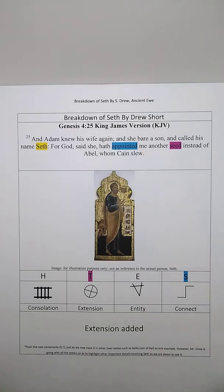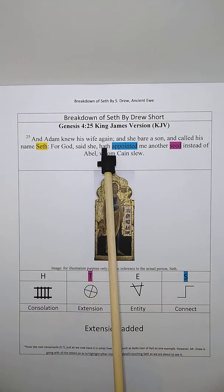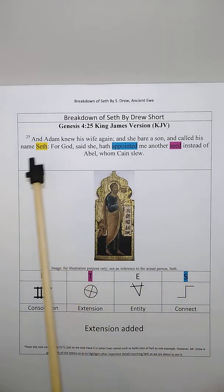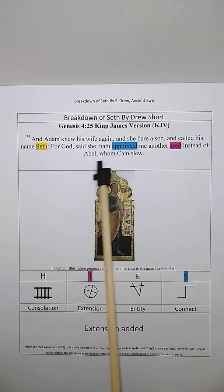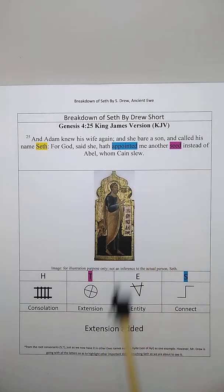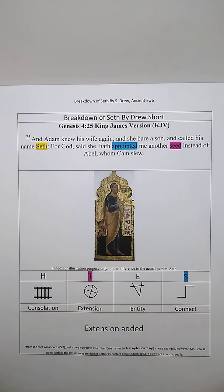We're content about our progress so far. The context is Genesis chapter 4, verse 25 from the King James Version. This is an image of Seth for the purpose of illustration only. This image is not an inference to the actual person Seth, and thank you for your understanding in that regard.